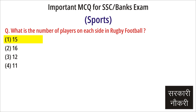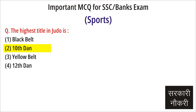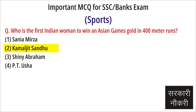Question: What is the number of players on each side in rugby football? Answer: 15. Question: The highest title in judo is? Answer: 10th Dan.